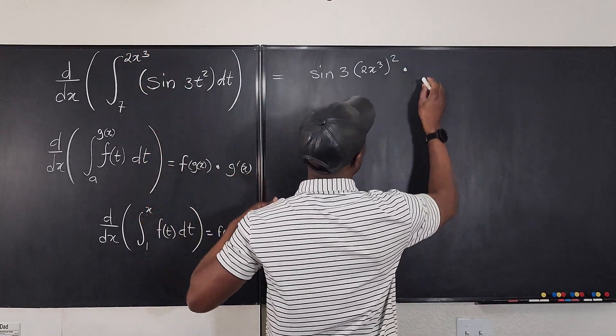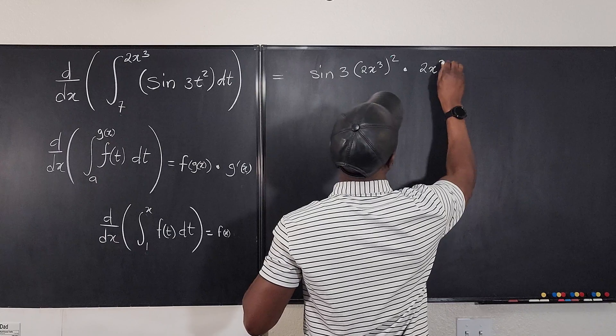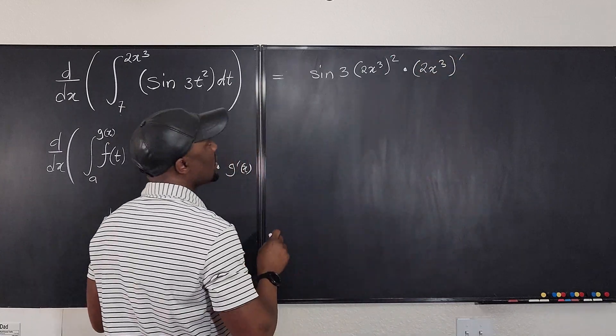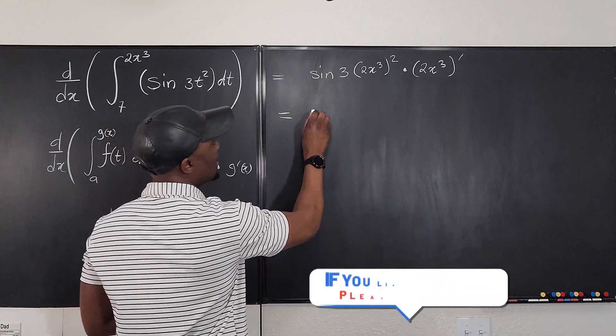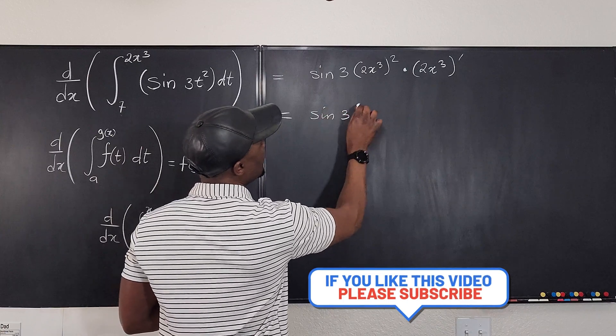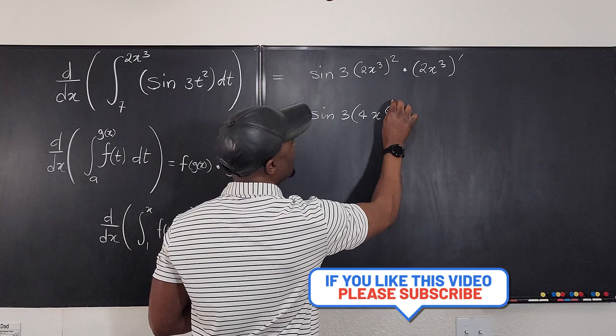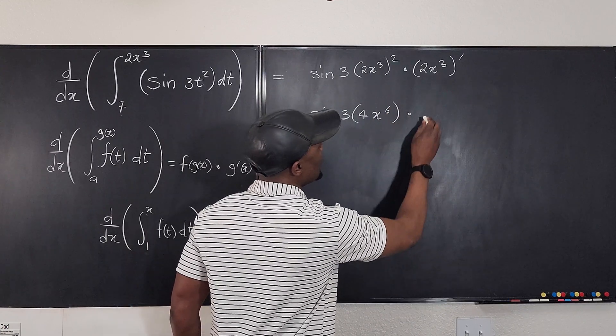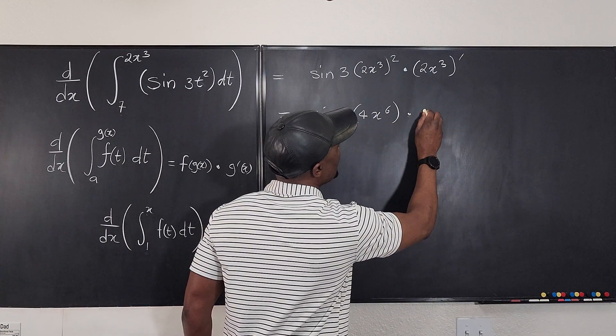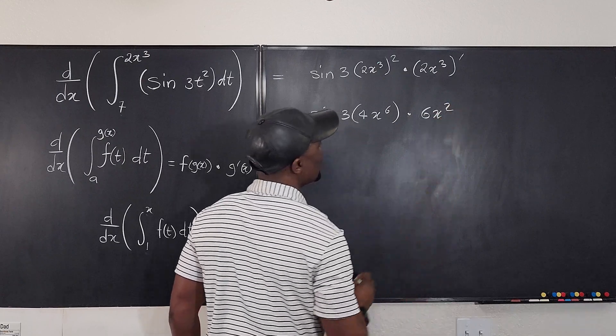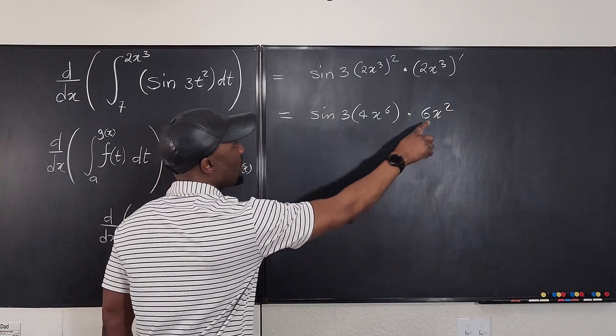So what do we have? We have sine 3 times the square of this is going to be 4x to the sixth, times the derivative of this, which is going to be 6x squared. So that's what we have.